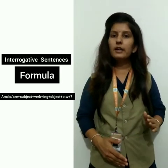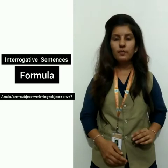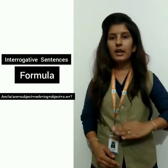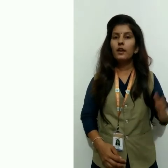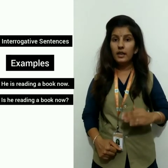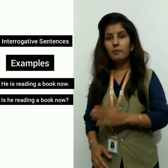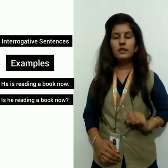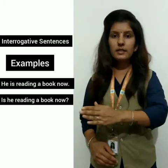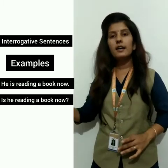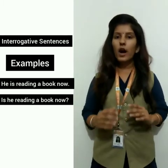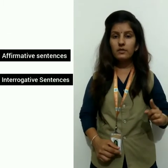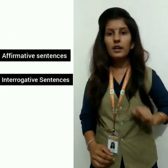Let us repeat the affirmative sentence and convert it to interrogative. Affirmative: He is reading a book now. Interrogative: Is he reading a book now? Here 'is' moves to first position, 'he' moves to second position, and a question mark comes at the end.